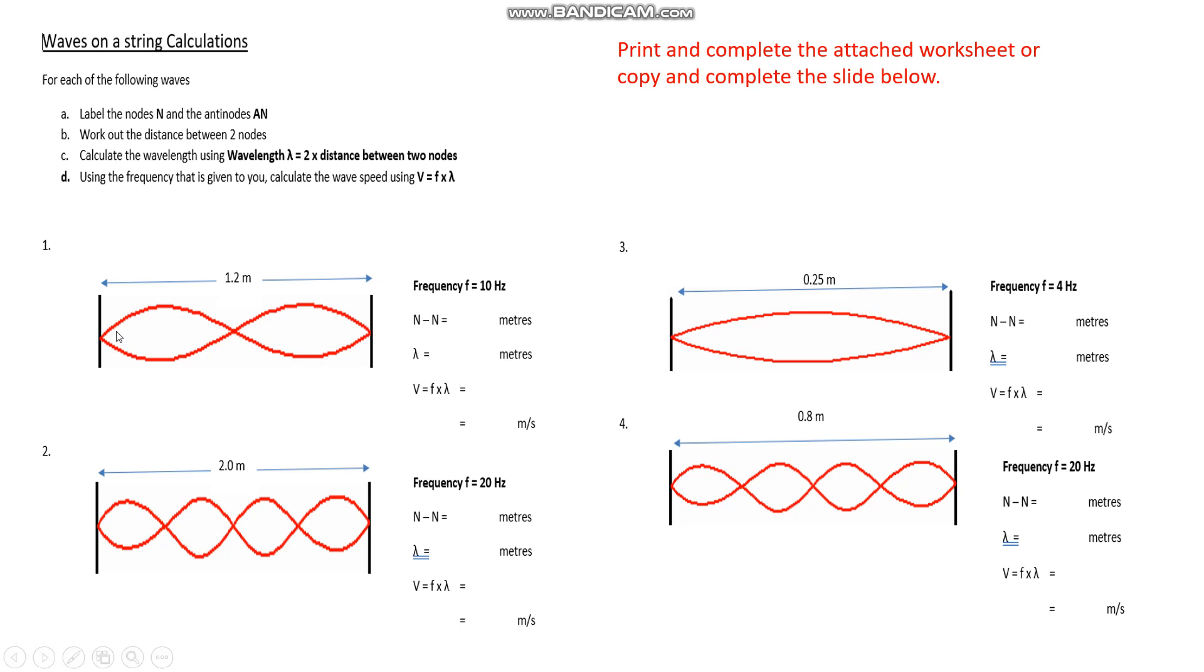Now what I'm going to do is take you through the very first one, and essentially all you're doing is following these four instructions. So let's go through number one together. The first thing it says is to label the nodes N and anti-nodes AN. Well, okay, if I do that with diagram number one, now there's a node, that's this point here. Remember, there's another node and there's another node. Now the anti-nodes are of course there and there. We're not terribly interested in the anti-nodes per se to solve this problem here.